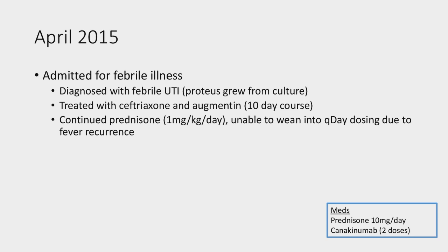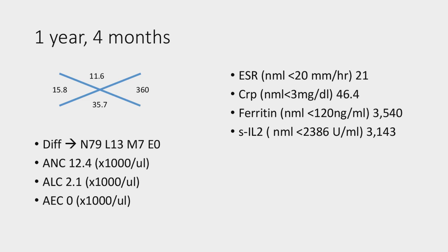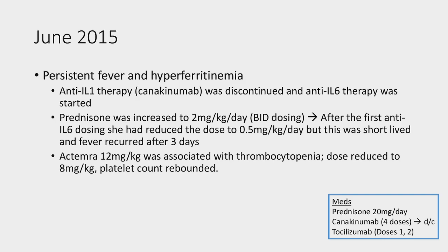Continuing monthly febrile illnesses, she came to the emergency department and was noted to have a febrile UTI. Proteus grew from the culture. She was given ceftriaxone and augmentin and completed a 10-day course. The prednisone was kept at one milligram per kilogram per day. Labs at that time were a little confusing because the sed rate and CRP weren't as high as expected for someone acutely infected. She continued to have hyperferritinemia and elevation in soluble IL-2, but her hemoglobin had crept back to normal and she didn't have thrombocytosis.